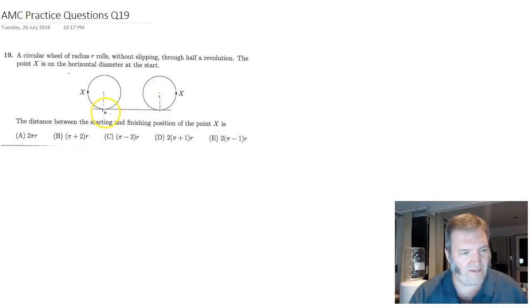Well, it's half a revolution, so this distance between the center of the circle and the center of the circle must be half of the circumference, because it's rolling along the circumference without slipping. Half of the circumference, half of 2 pi R, is just pi times R.